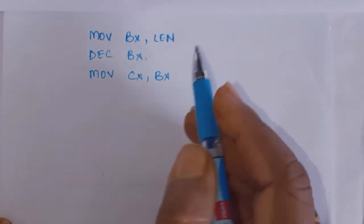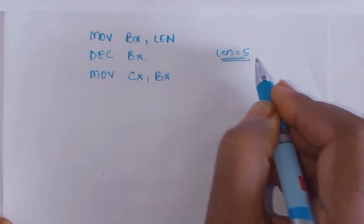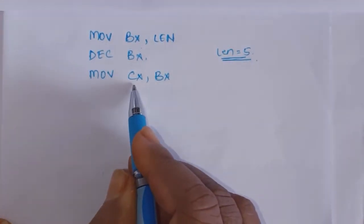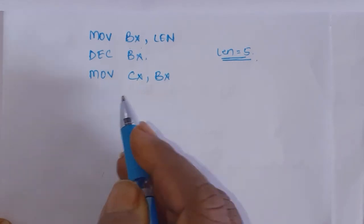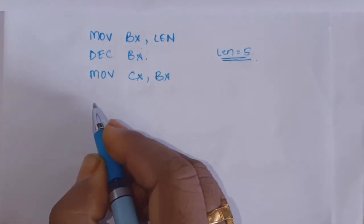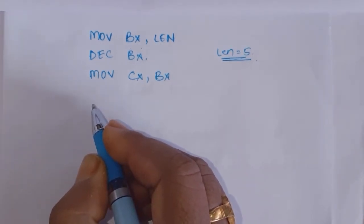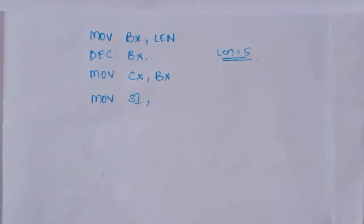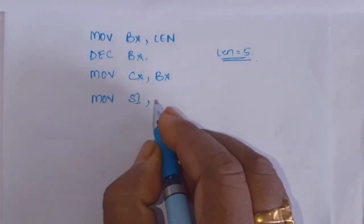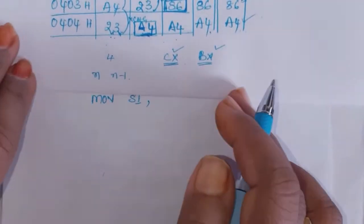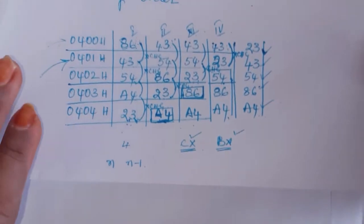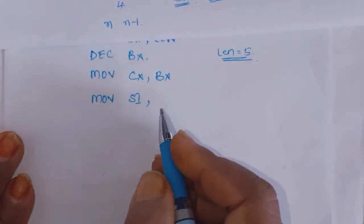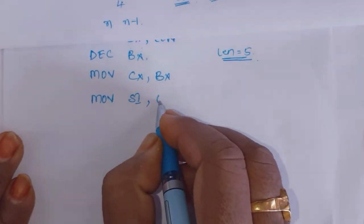Now BX and CX: the length is 5. Decrement BX — it becomes 4 — and that same value is moved to CX register. Next, we need a pointer to point to the elements in memory. For that, let us take SI register as a pointer register, loaded with the address 0400H. The elements are in an array starting from offset address 400. So we point the first element with SI register at 0400H. The 20-bit physical address is generated by adding the data segment contents with this offset address in SI.